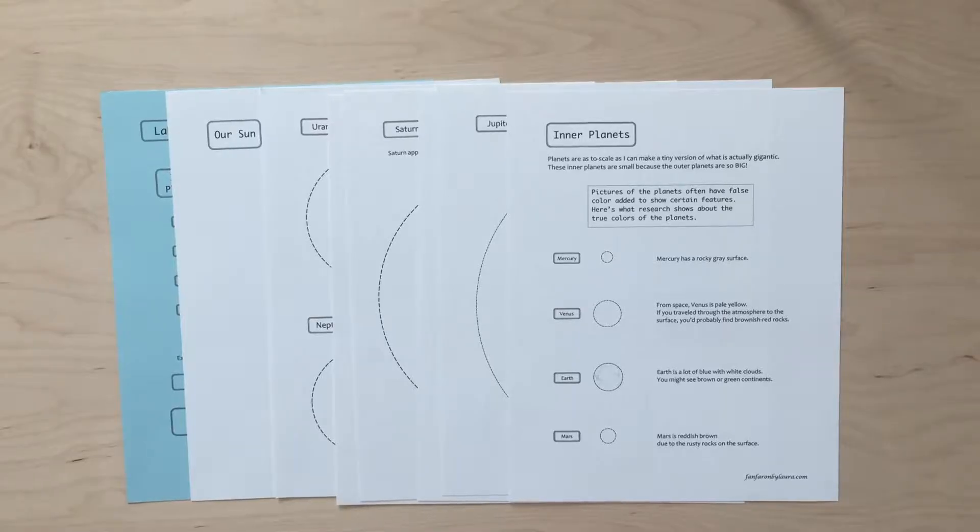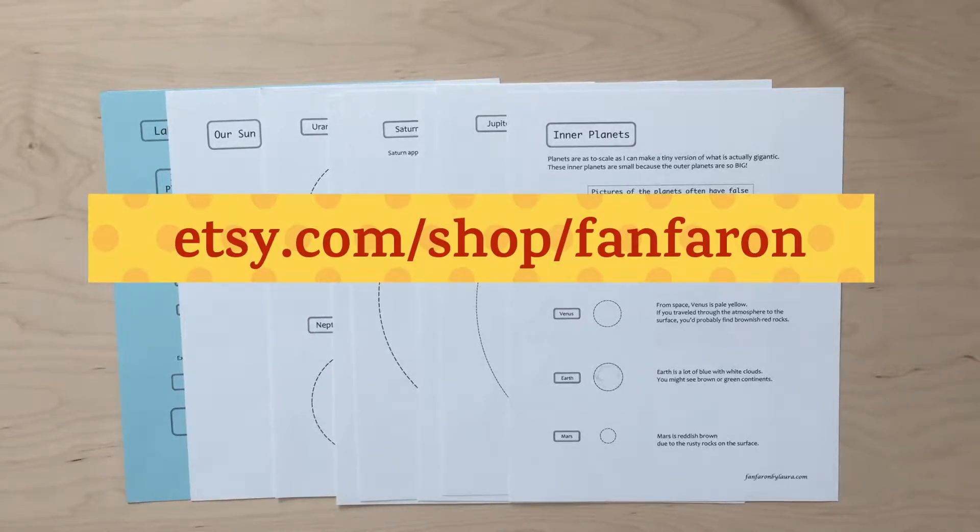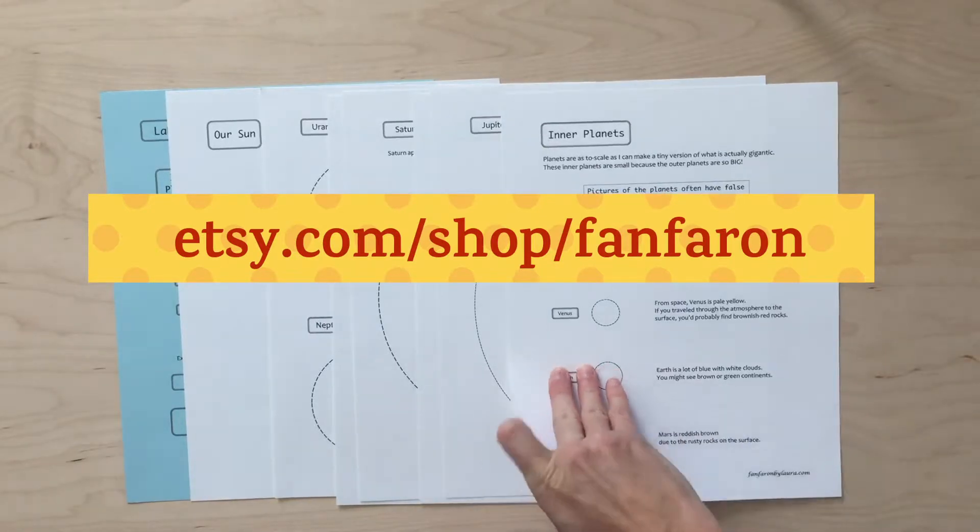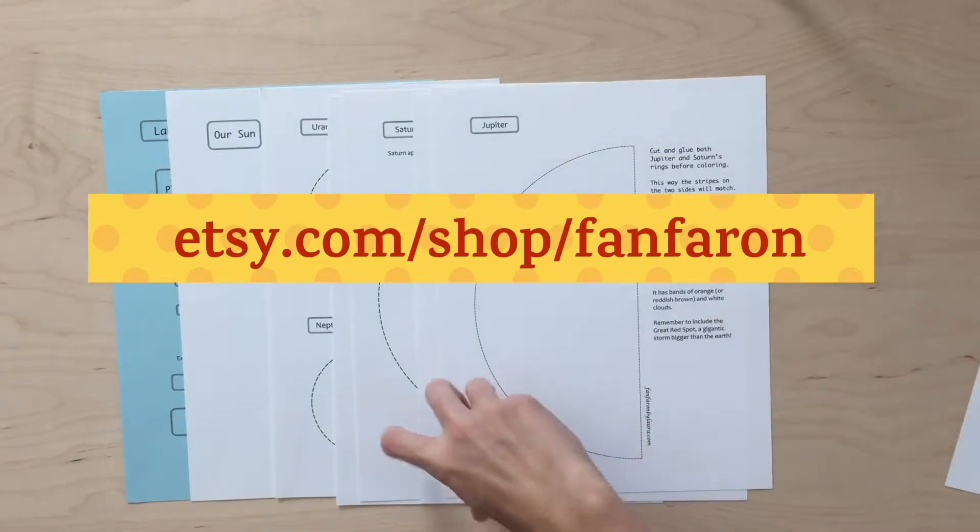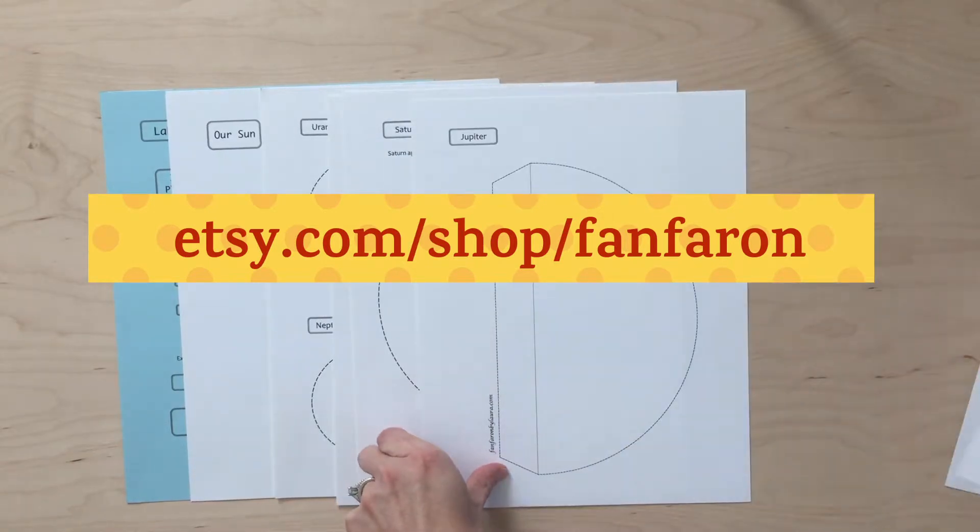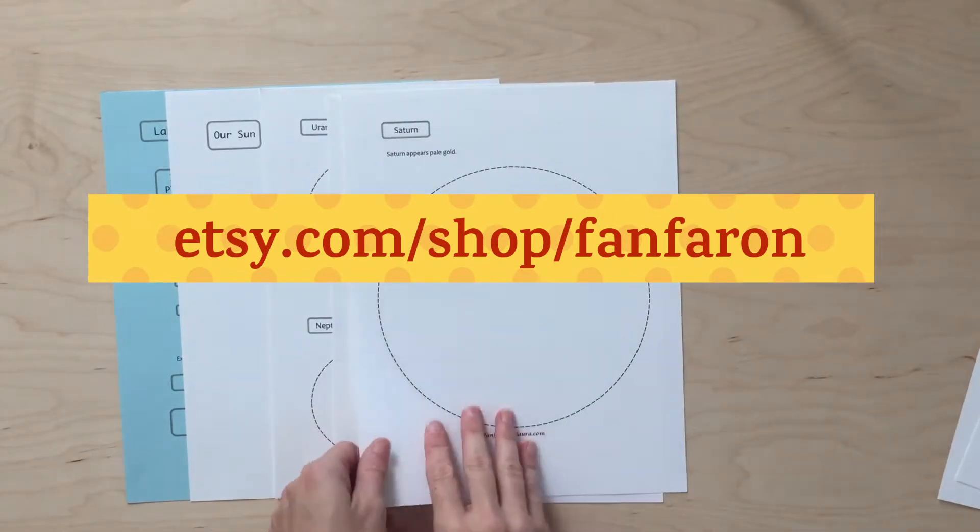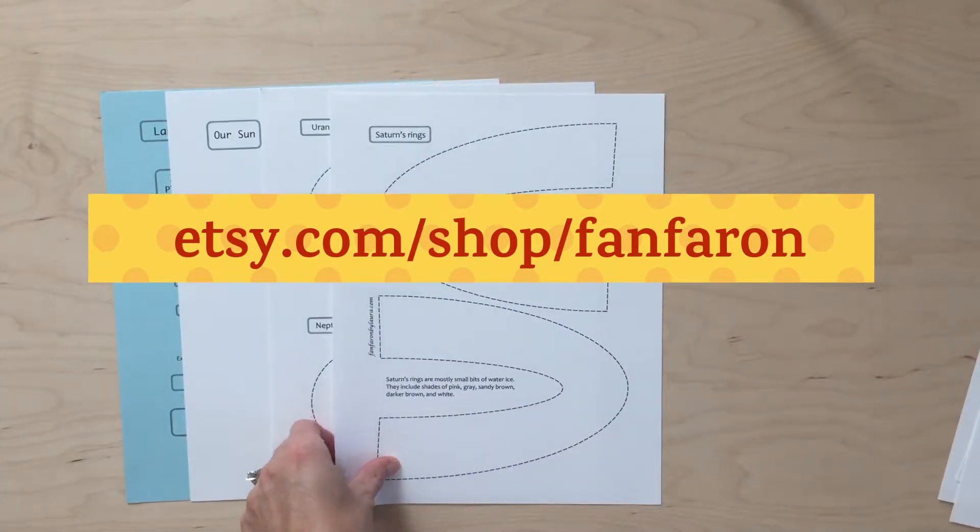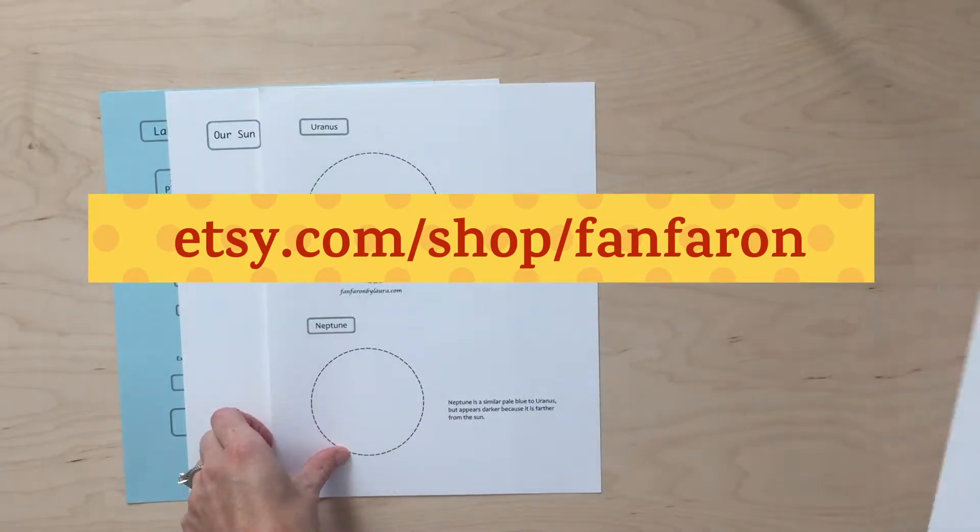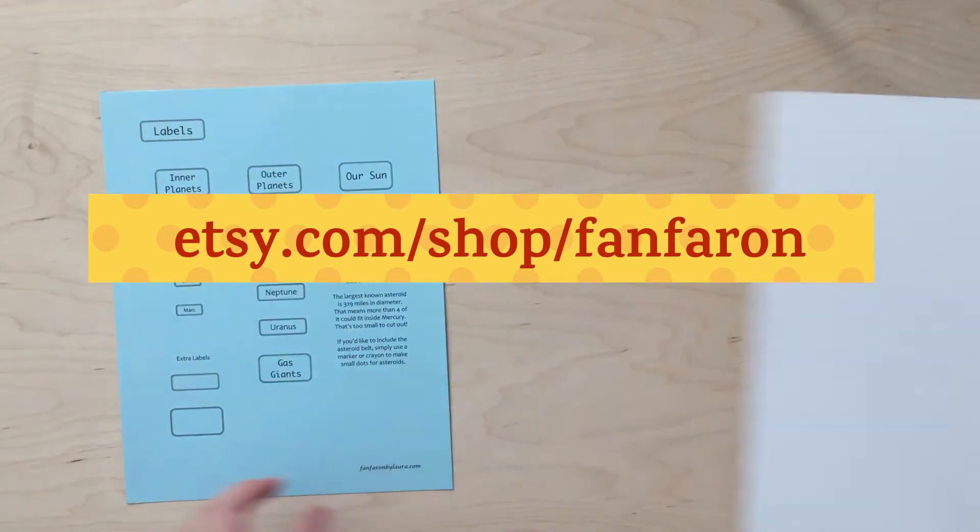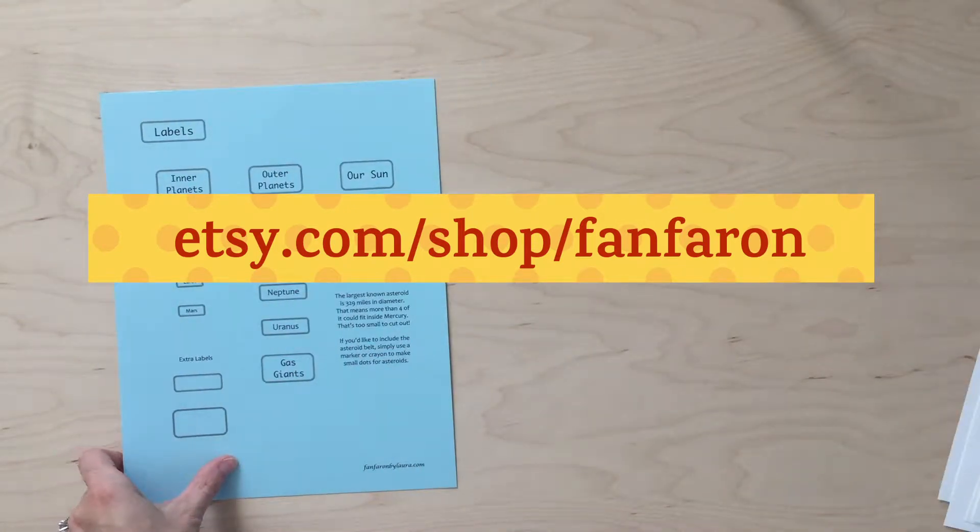You can purchase the solar system printable from my Etsy shop at etsy.com. Download it to your computer and print it on your own printer. You will get all of the planets to scale, which is why Jupiter is really large and the inner planets are really small. You also get a portion of the sun and some labels, as well as a lot of ideas for how to use these for a solar system project.